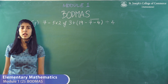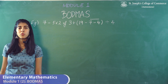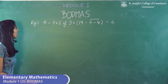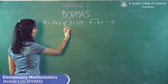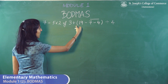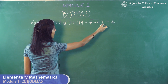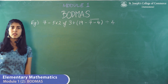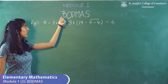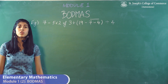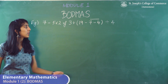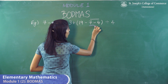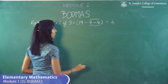Let's understand how to solve a sum using BODMAS. Here is an example: 7 minus 5 into 2 of 3 plus 19 minus 7 minus 4 divided by 4. You start with the first letter under BODMAS, which is B, so you try to eradicate the brackets. The first bracket to remove is the bar bracket.